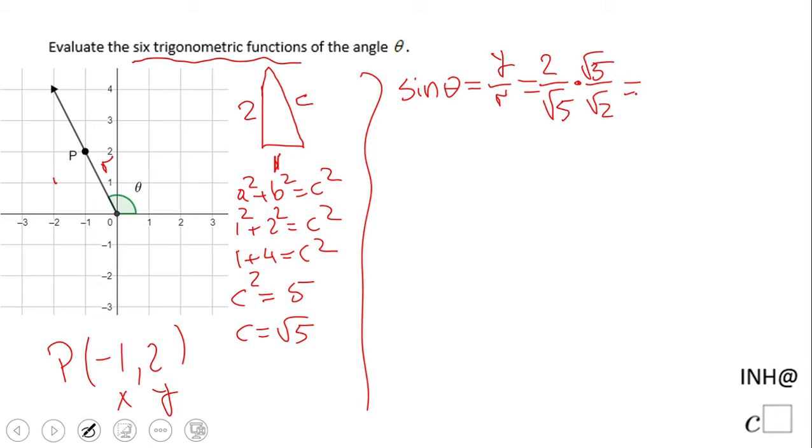And we get 2√5 over 5. Cosine of theta will be